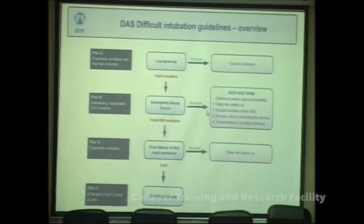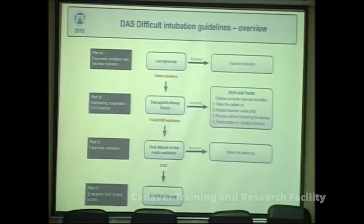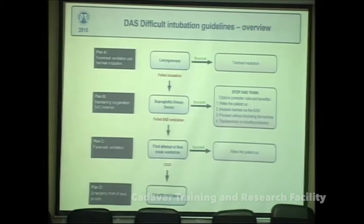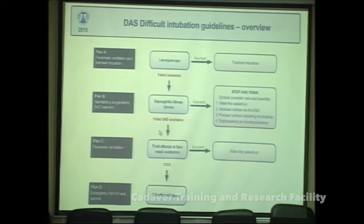If the supra-glottic airway device was successful, we consider whether to continue with it or proceed to the next step. Under anaesthesia, options include waking the patient up, intubating via the supra-glottic device, proceeding without intubation, or performing a tracheostomy or cricothyroidotomy. If supra-glottic airway placement fails, we return to face mask ventilation, and the final resort is cricothyroidotomy.